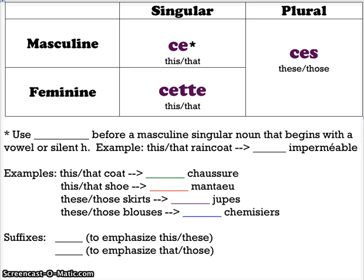Remember, demonstrative adjectives mean this or that, and in French that is true — they can mean either one. The French don't make the distinction between this and that nearly as often as we do in English. You usually tell from the context whether you mean this or that. So remember, it can mean both. Ce and cette can each mean this or that, while ces can mean these or those. Three small forms, very easy to remember — they all start with ce.